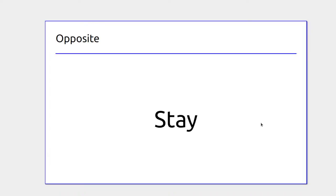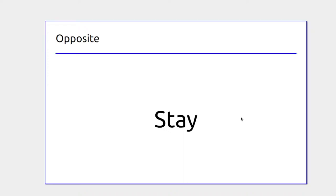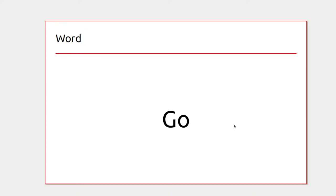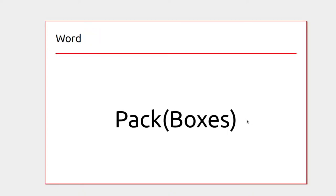An option might be whether someone wants to go — leave a particular area — or stay. A plane might only have one spare seat for a family of two, and you'd ask which one wishes to go or which wishes to stay.